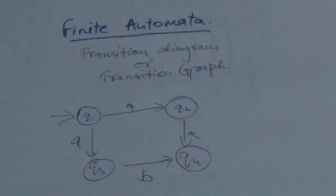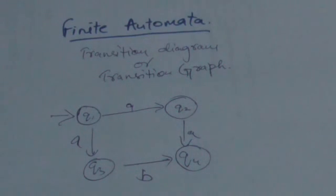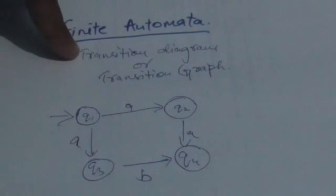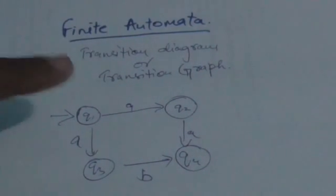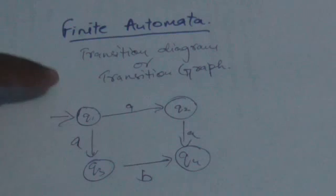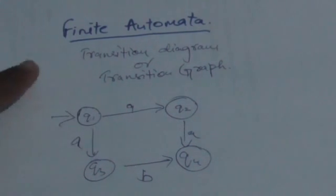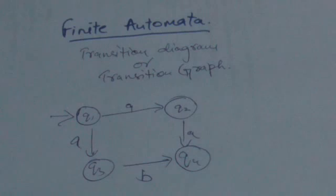Hello friends, welcome back to the tutorial. In this tutorial we will study how we can represent a finite automata. We can represent a finite automata graphically, and when we represent it by a graph, that graph is called a transition diagram or transition graph.